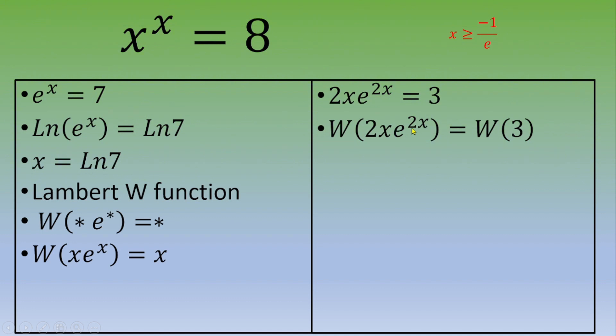W of 2x times e to the 2x equals W of 3, and then we end up with 2x equals W of 3,